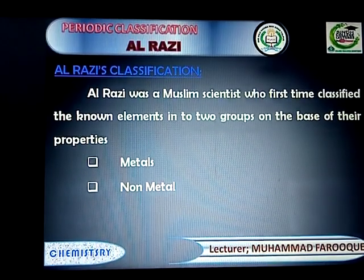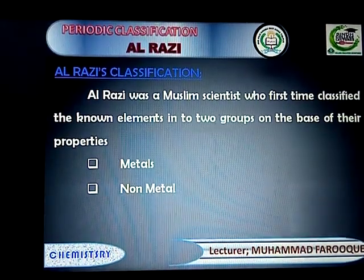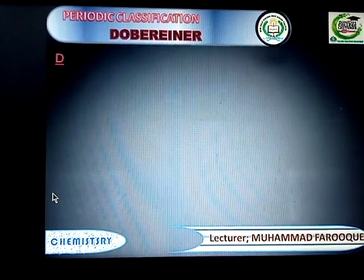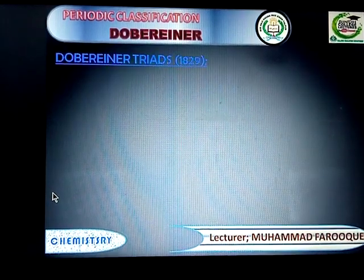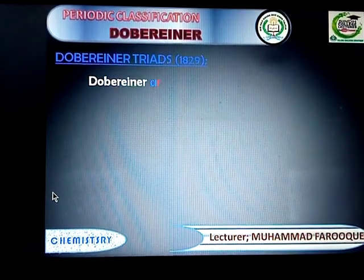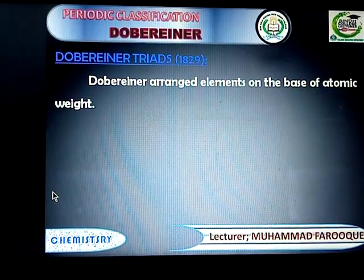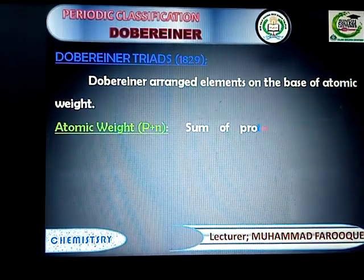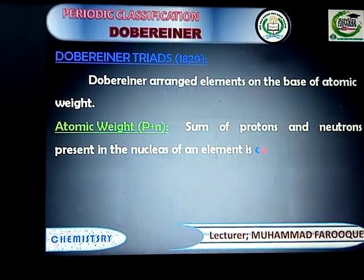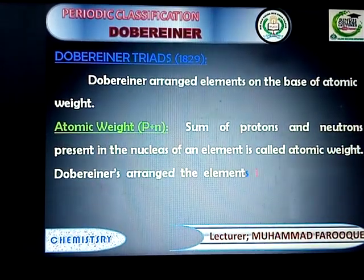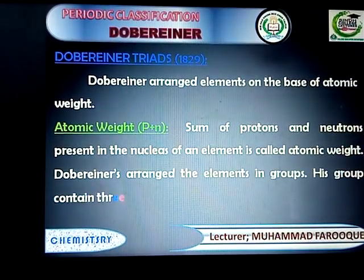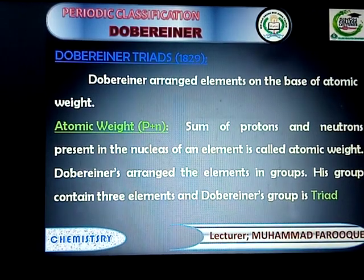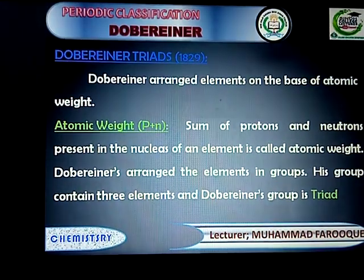Next is Dobereiner's classification. Dobereiner arranged the elements on the basis of their atomic mass in 1829. First, I will tell you about atomic mass. The sum of protons and neutrons present in the nucleus of an atom is called atomic mass.